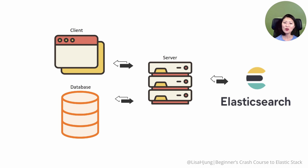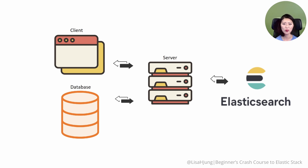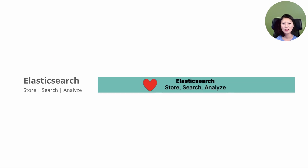Let's go even one step further. For your app, you're collecting a lot of data such as order information, purchase history, and more, and we want to make use of that data. For example, we want to know what was the revenue for the last month or which products are most popular. To answer these questions, you can enter relevant data in Elasticsearch, so you could search and analyze your data to answer your questions.